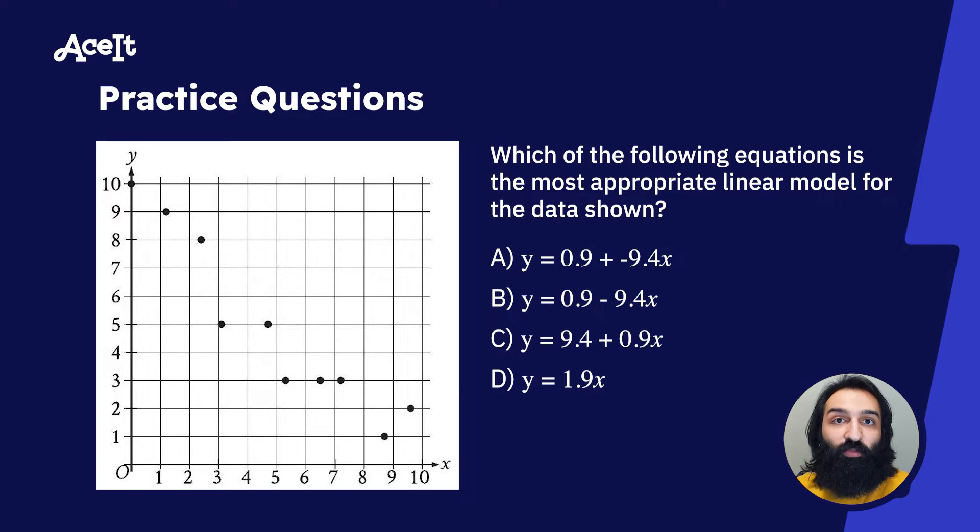To solve this one, we want to do the same thing we just did on the previous problem. Take a second to figure out what the slope would be again. Will it be positive or negative? The slope is negative since the data points are moving downward. That means we can eliminate answers A and C.